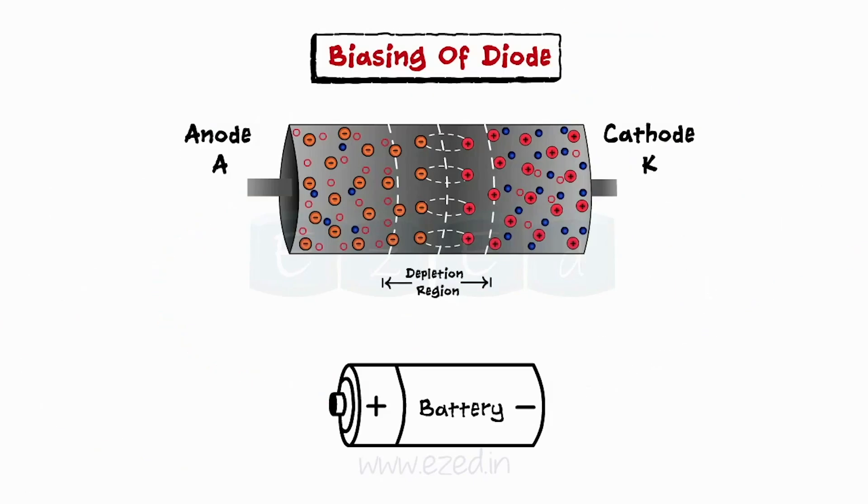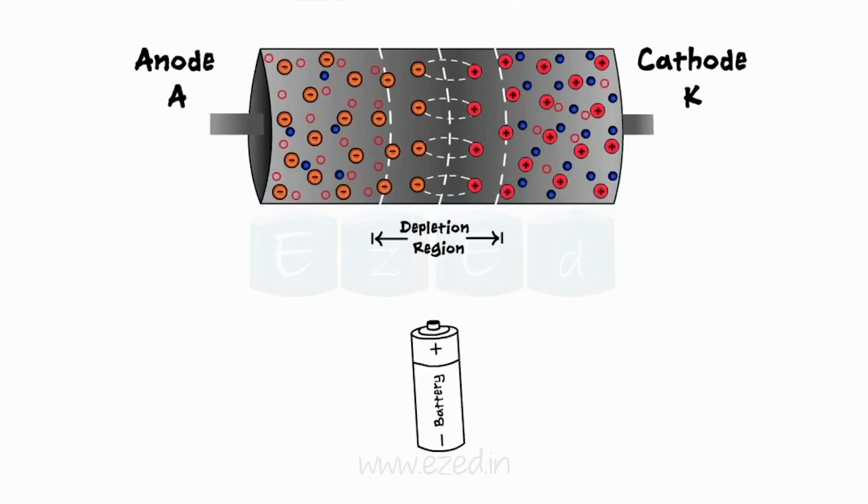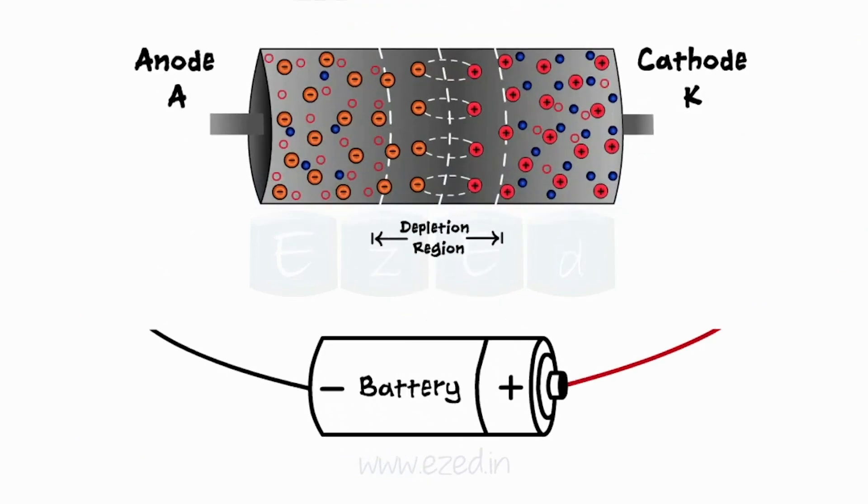In the second case, we apply the battery in reverse direction. That is, we apply positive of the battery to cathode and negative of the battery to anode.